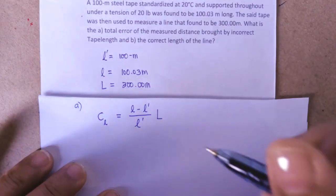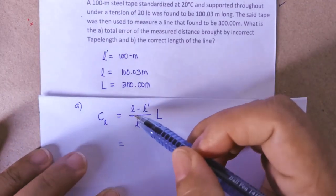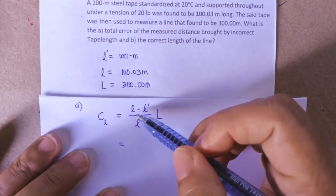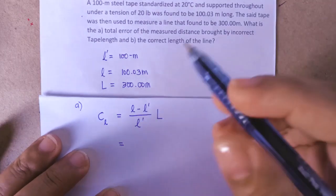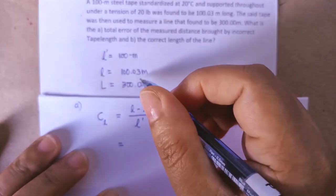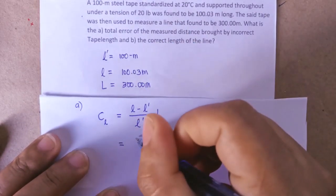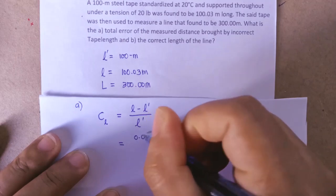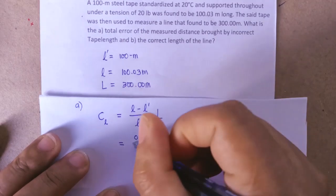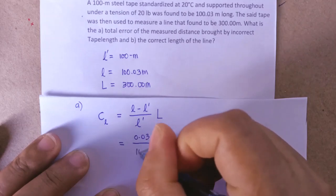Substituting the value, we have the actual length 100.03 and the nominal length which is 100, then you will get 0.03 and you have l which is equal to 100.